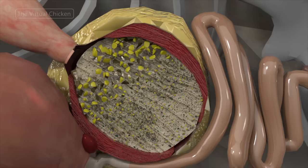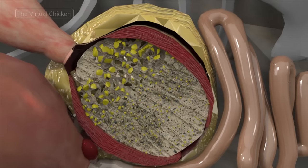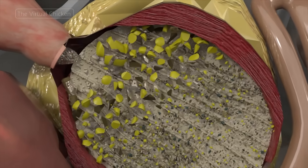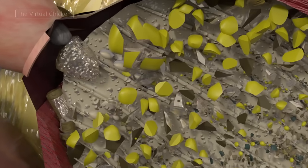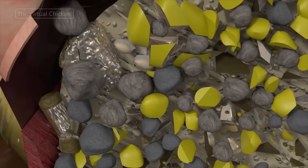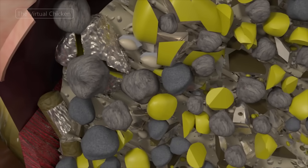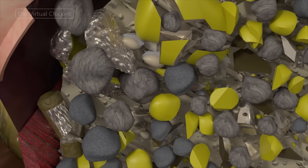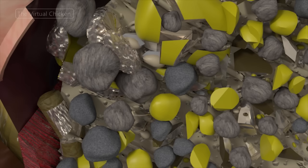Though the gizzard consists of very powerful muscles, it alone can't pulverize everything the typical bird eats. Grit and small rocks are picked up as birds peck and feed. This mineral matter accumulates in the gizzard and the particles help pulverize the seeds and grain. Once the food is ground, it passes into the small intestine.